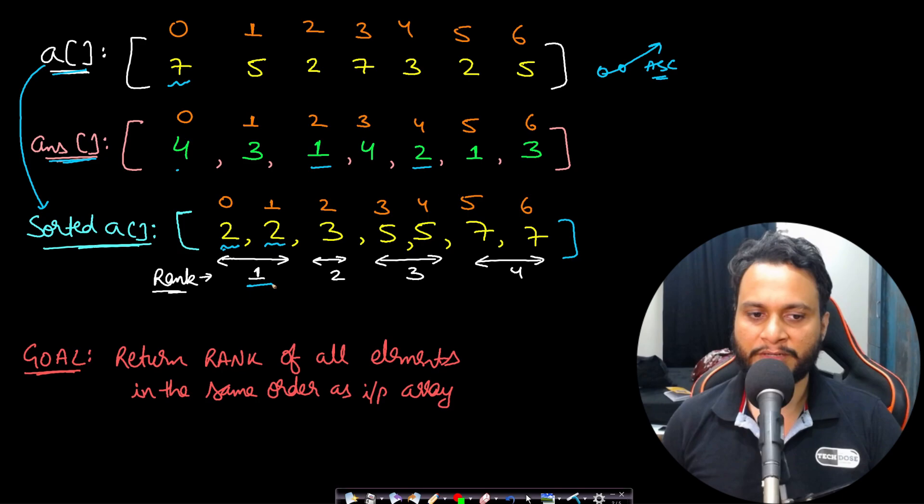So both these 2 and 2, since they occur in the beginning, they will get rank 1. And then in the sorted array, 3 comes after 2. So this will get rank 2 and then 2 fives will get rank 3 and 2 sevens will get rank 4.